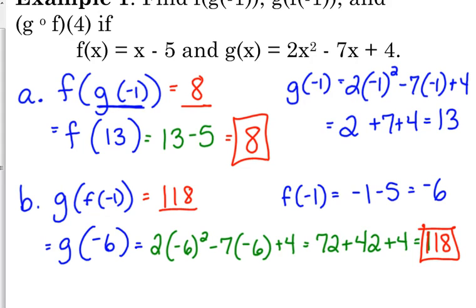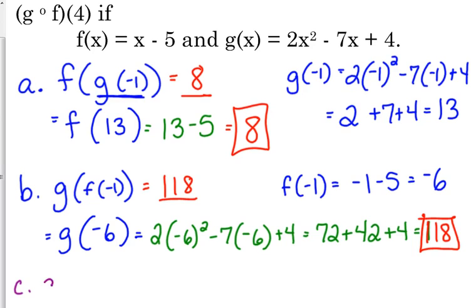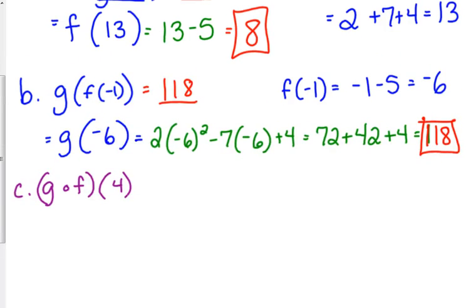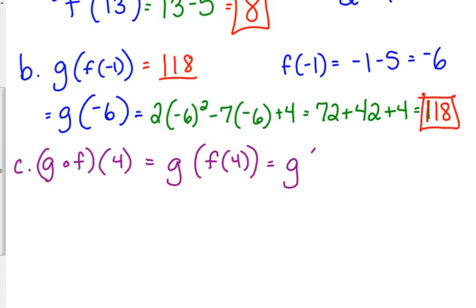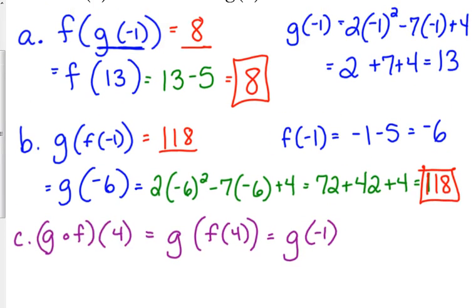Let's do one more. Let's do g of f of 4. So the order most definitely matters when we're talking about compositions of functions. Now remember, and we struggled, a few of us struggled with this when we were dealing with functions before. This does not mean multiply everything by 4. This is the same thing. f of 4, 4 minus 5 is negative 1. So that's g of negative 1. Well, we already found that a second ago. g of negative 1 was 13.